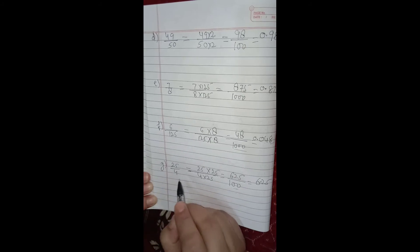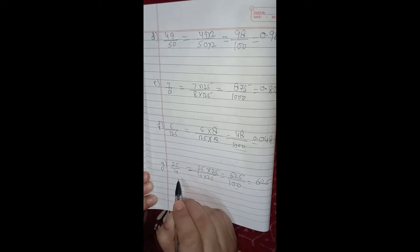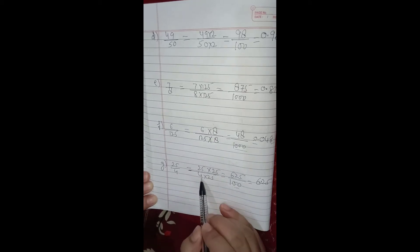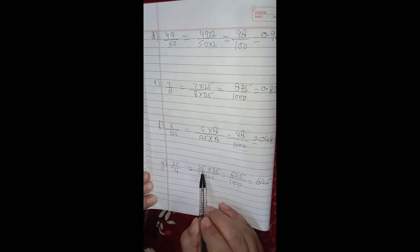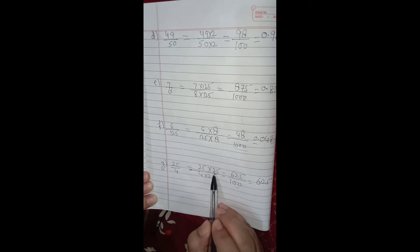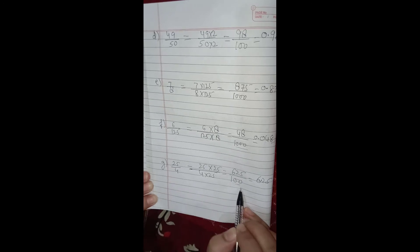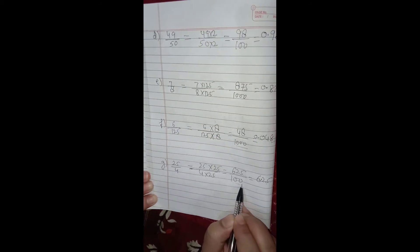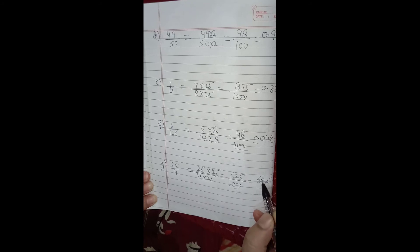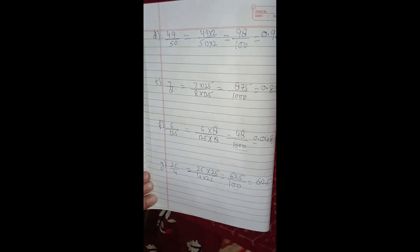Part g is 25/4. Multiply the denominator 4 by 25 to make it 100, and multiply the numerator 25 by 25 to get 625. So it is 625/100. Since the denominator has two zeros, write the numerator and count from the right side: 1, 2 — place the decimal before two digits. The answer is 6.25.